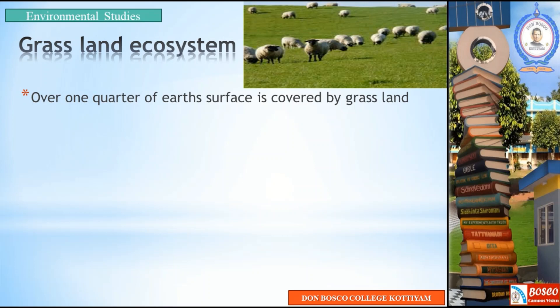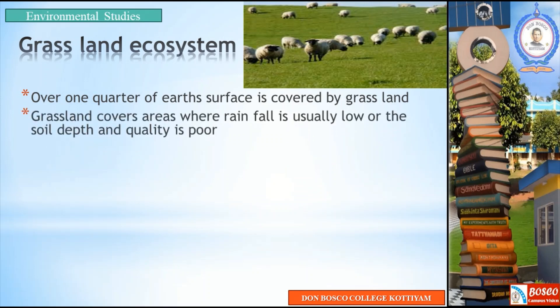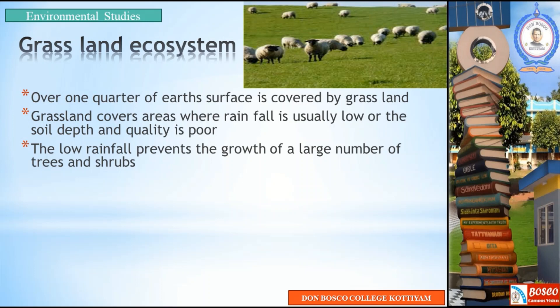Grasslands include several different ecosystems. Many different ecosystems depend on grassland. Grasslands cover areas where rainfall is usually low or the soil depth and quality is poor. The low rainfall prevents the growth of a large number of trees and shrubs.